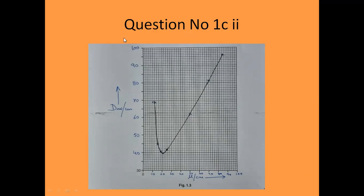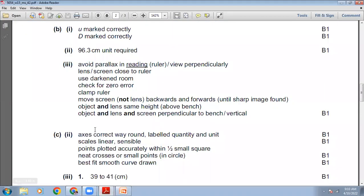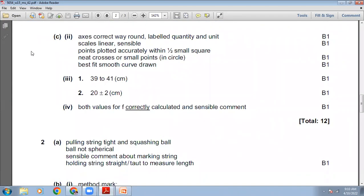The graph has D average in centimetres on the Y-axis and U in centimetres on the X-axis, with scales running to 100 on both. The marking scheme awards marks for: axes correctly labelled with quantity and unit, sensible linear scale, points plotted accurately within half a small square, neat crosses or small circled points, and a best-fit smooth curve drawn.